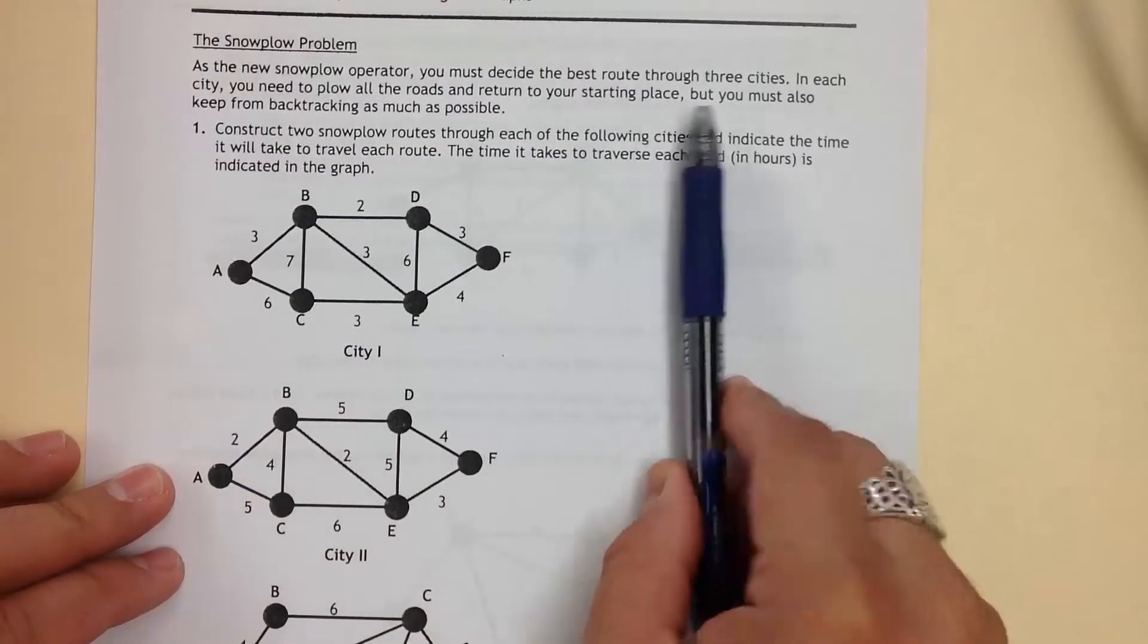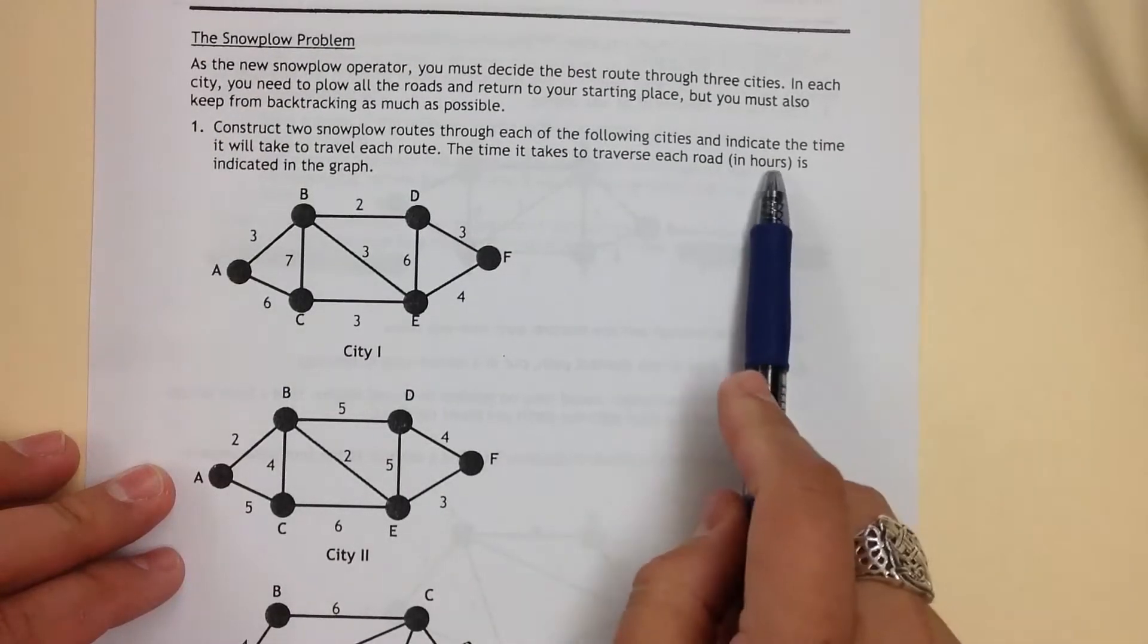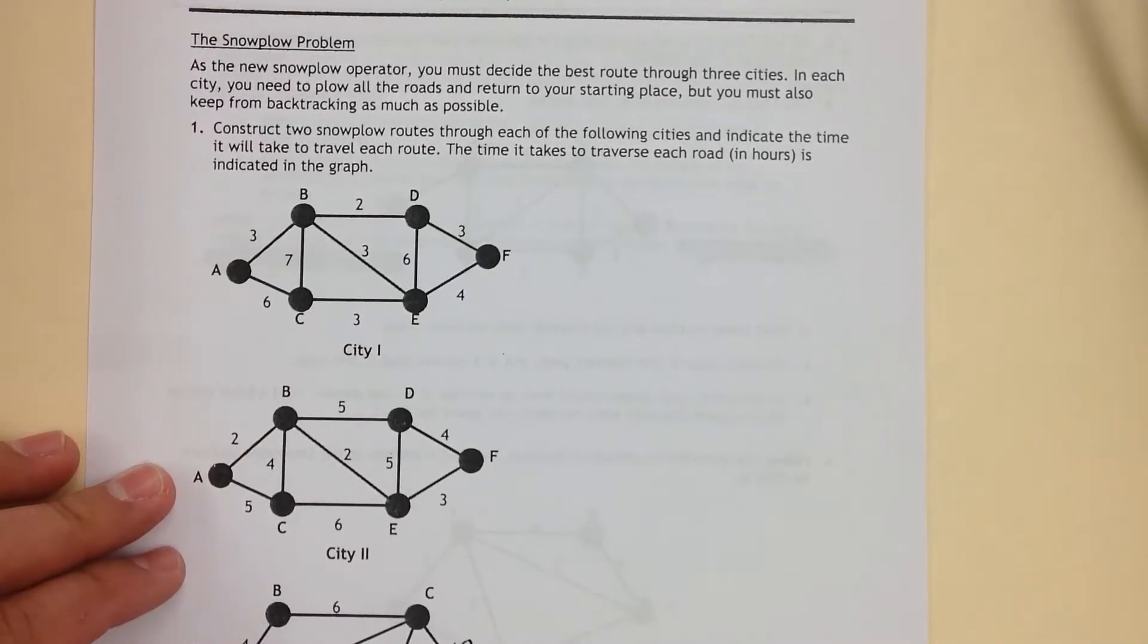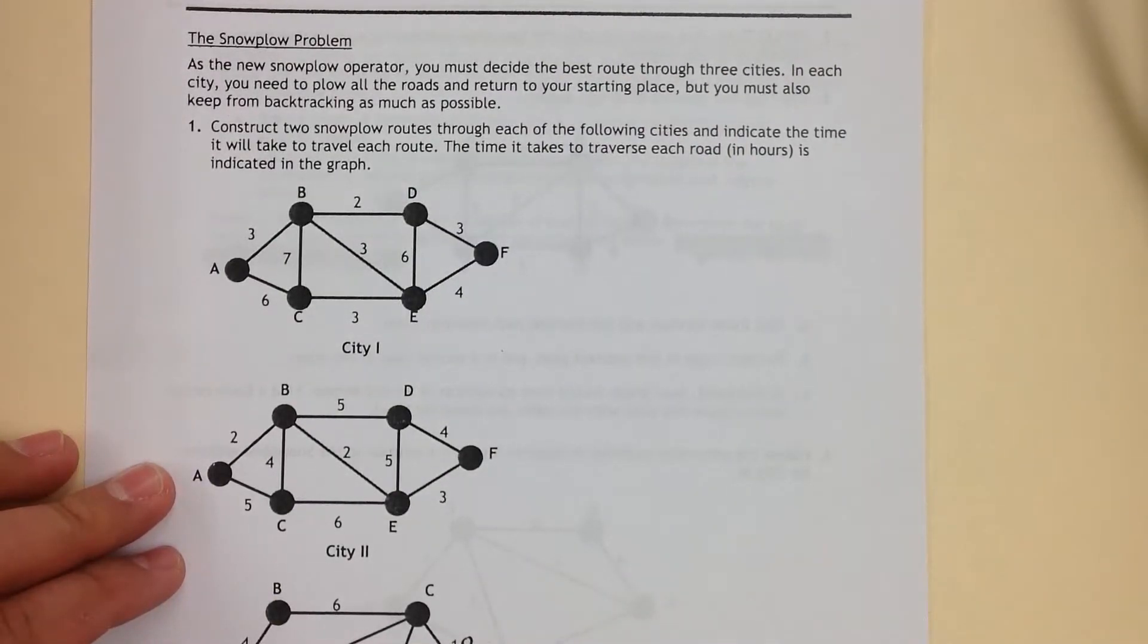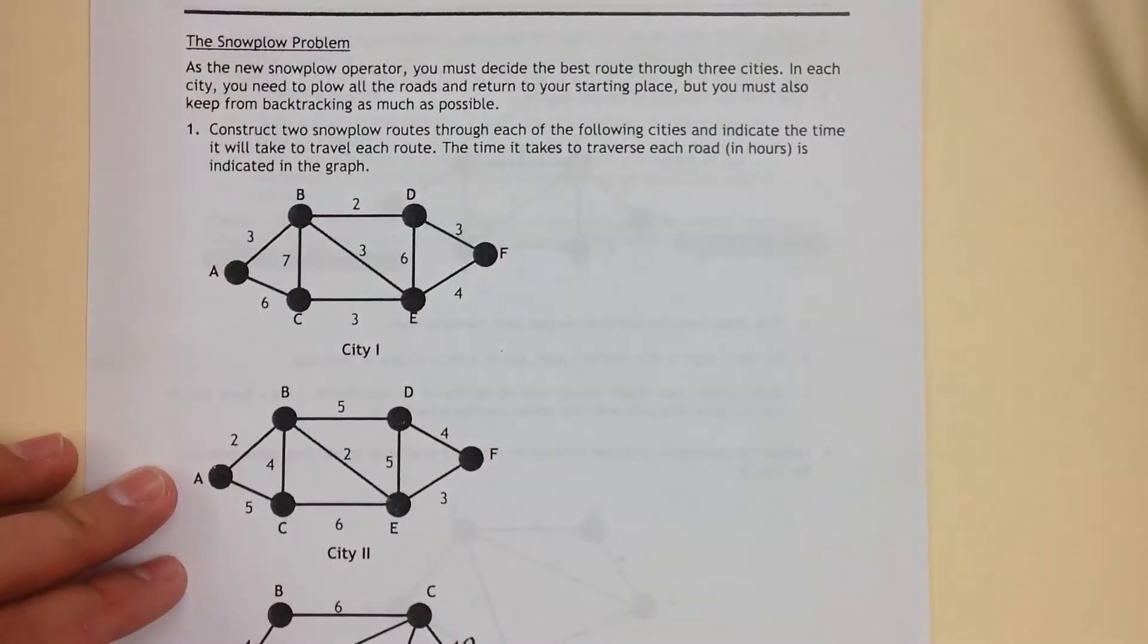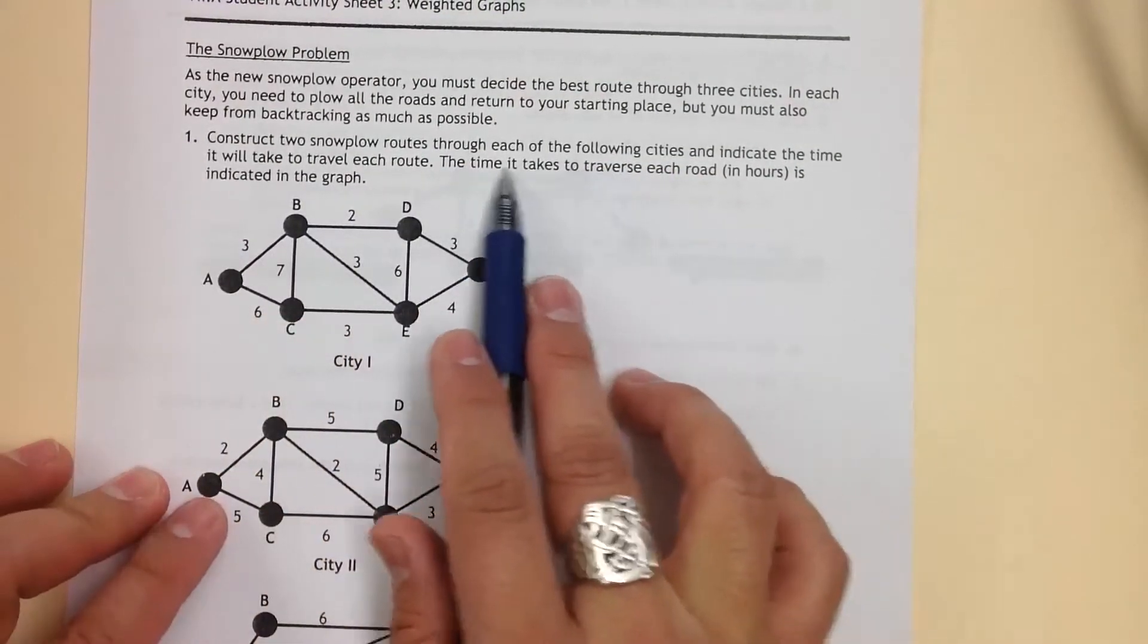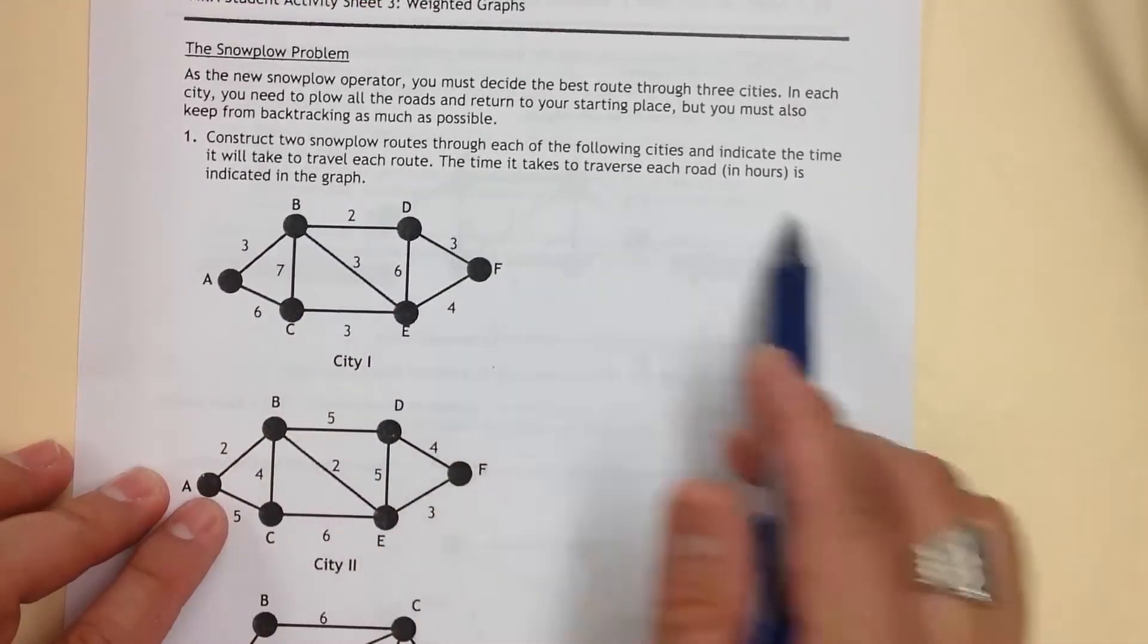Now, this is snowplow operators in this example, and I really don't like this because it has it in hours. We live in an area that doesn't have much snow, so I have no idea how accurate this is. I don't know how long it takes to go ahead and go through roads and clean them or anything like that. But we're going to be calculating the most efficient time to go through this graph, so that way you can calculate that.